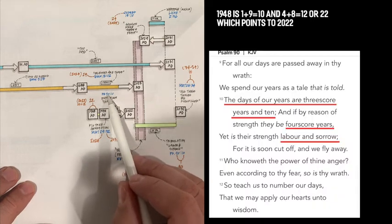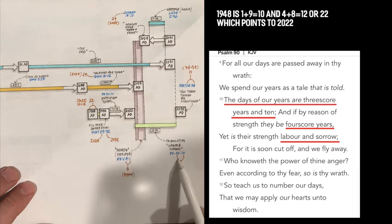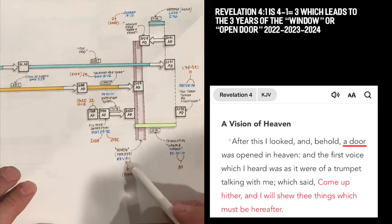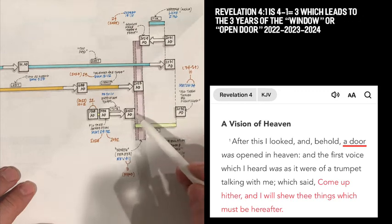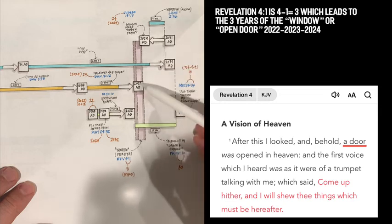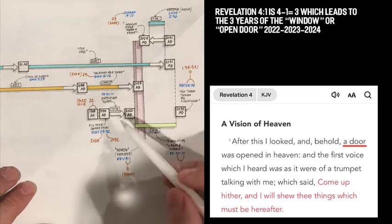We already know Psalm 90, 10. That's 10 years, 90 minus 10. So that matches perfectly well with the years of labor and sorrow. And then the window, it's going to be the Revelation 4:1 door open or window. 4 minus 1 is 3, which is 3 years and talks very well about these 3 border years, 24, 23, and 22. Clearly, 23 being the absolute center of it.